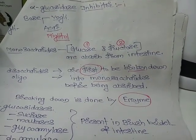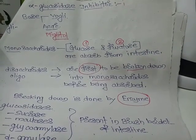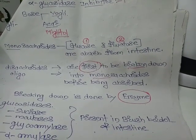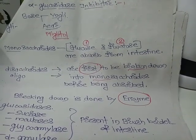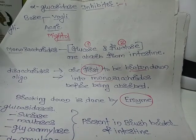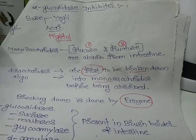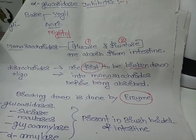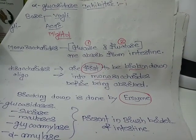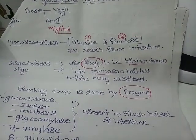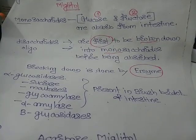Today we are going to discuss the alpha-glucosidase inhibitors. In that category we have voglibose, acarbose, and miglitol. To understand these drugs, we should know what is the function of alpha-glucosidase.